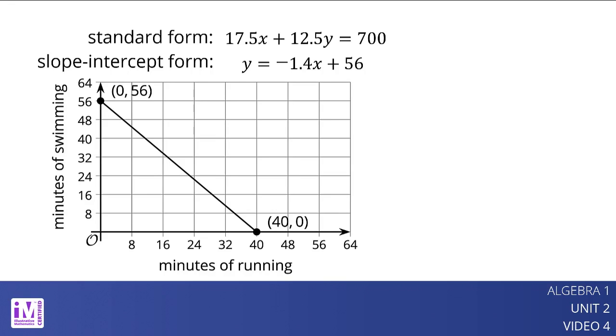The coefficient of x, negative 1.4, is the slope of the graph. It means that as x increases by 1, y falls by 1.4. For every additional minute of running, the athlete can swim 1.4 fewer minutes.